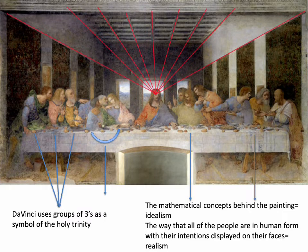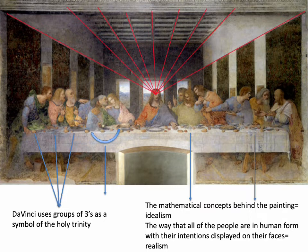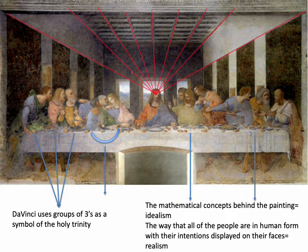Da Vinci also uses the new Italian one-point perspective, so this painting is highly innovative. It takes everything the Northern Renaissance artists were doing and uses that technology, but also incorporates all the new Italian technology with perspective. You can see how all the receding lines converge at Jesus's head, making Jesus the most important element in the image. Da Vinci also wanted to use the innovation of oil paints — we'll see how that plays out momentarily.